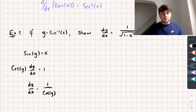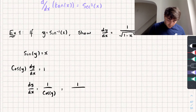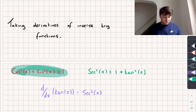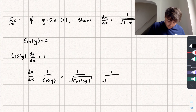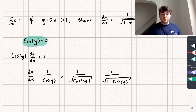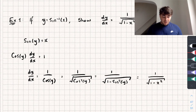From here we do a little trick: we square and square root the denominator simultaneously so it stays the same, rewriting it as 1 over the square root of cos²y. Using our trig identity, cos²y = 1 − sin²y, so we get 1 over the square root of 1 − sin²y. Since we said sine(y) = x, sin²y = x², giving us the derivative equal to 1 over the square root of 1 − x².